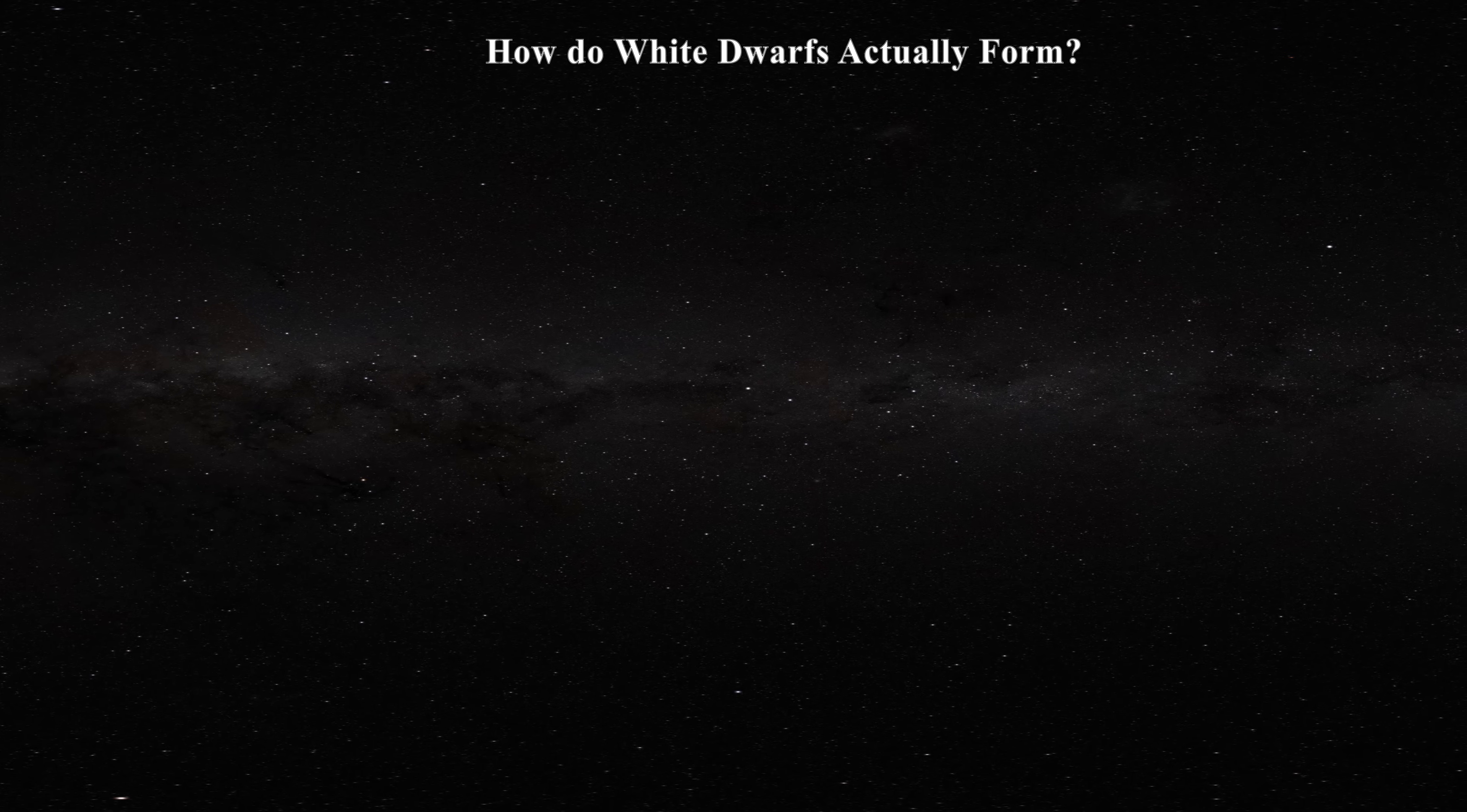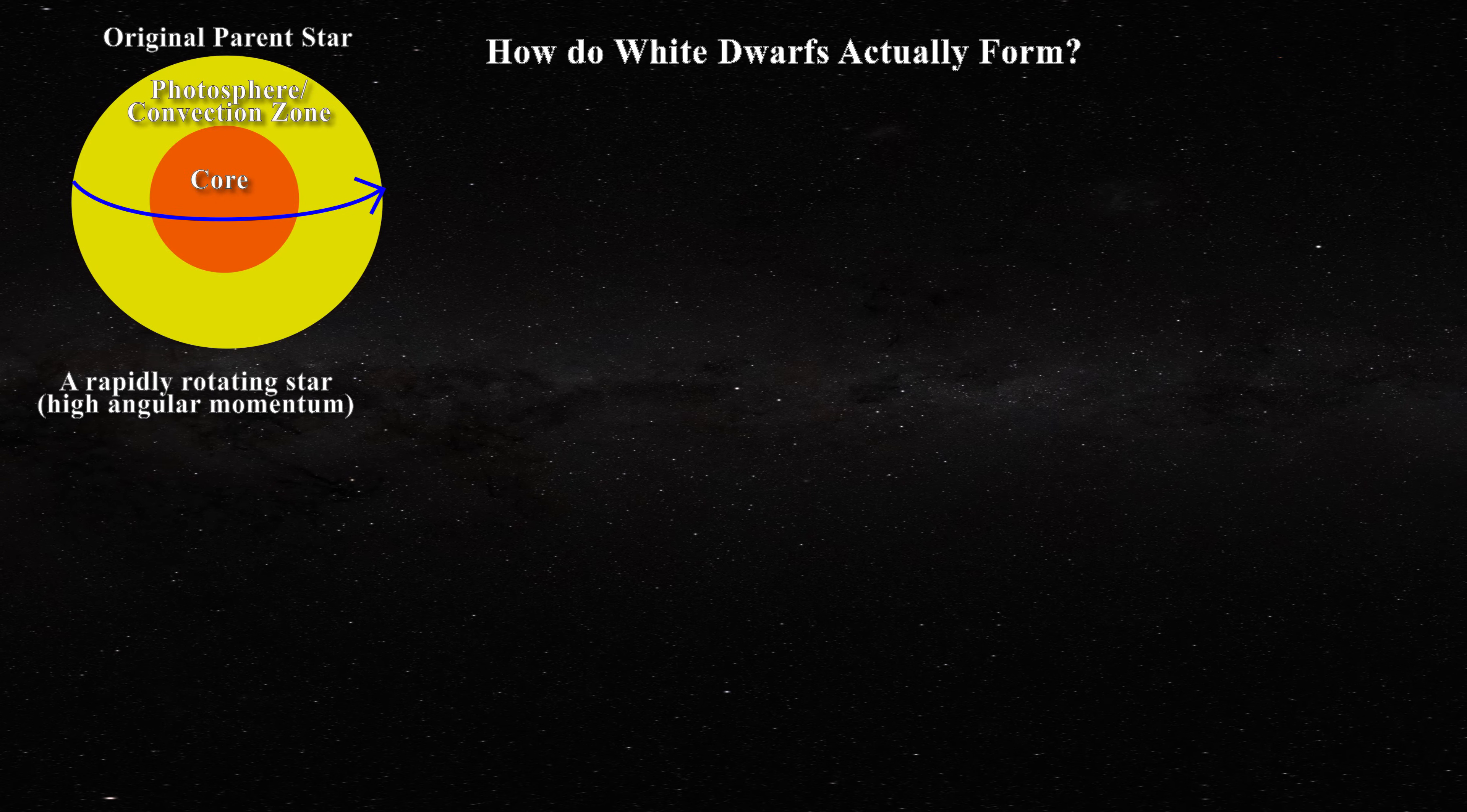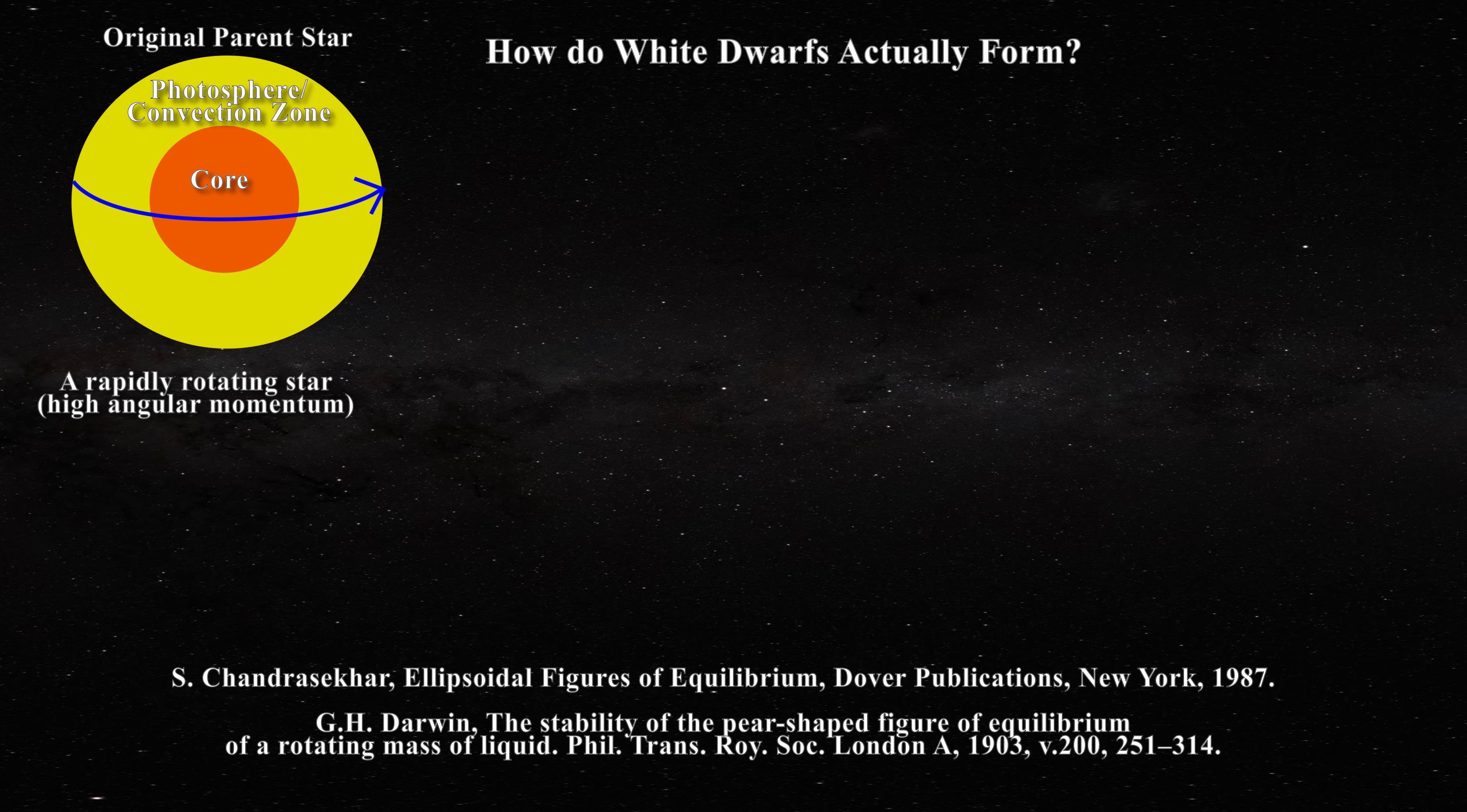The second possibility involves the ejection of a stellar core in a large and rapidly rotating parent star. Such a possibility is made feasible by the study of rotating ellipsoids, one of the foundations of liquid stars.